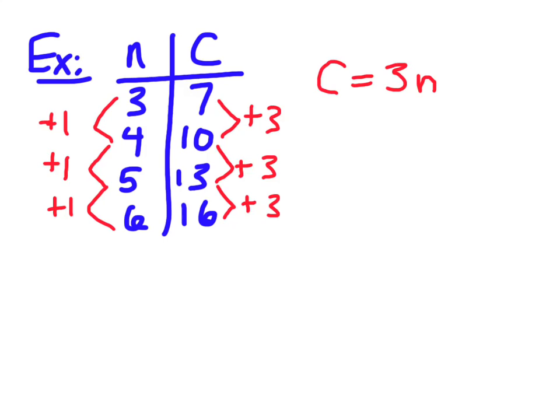So we always start with your dependent variable, which is C is equal to three times n. So you could do a quick check and see if this works. So if you try with three, as n is three, we go three times three. Well three times three is nine. We should get seven. So something has to happen after this, whether we add or subtract a number to it.